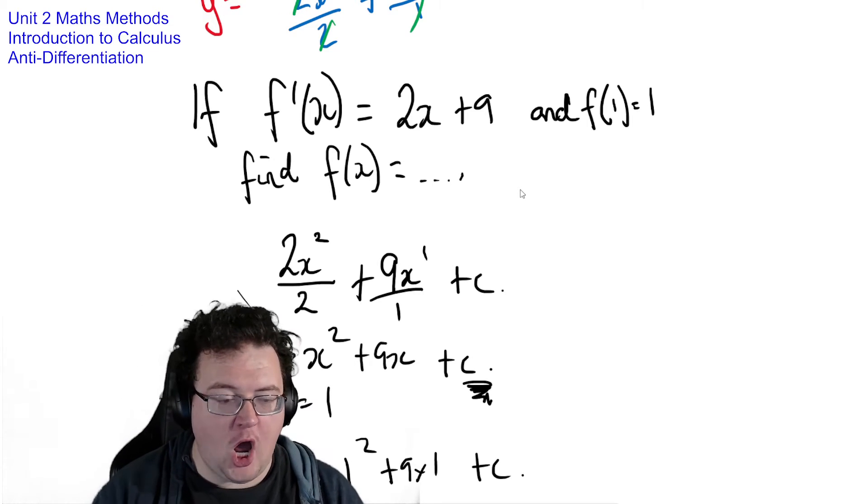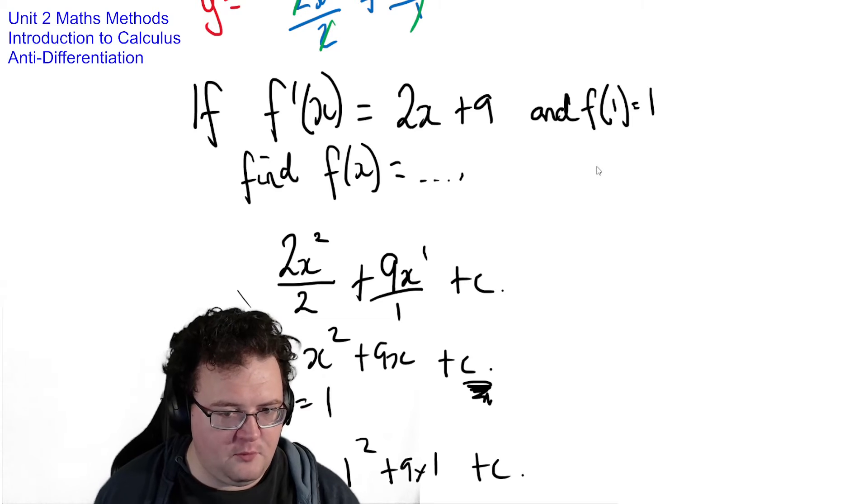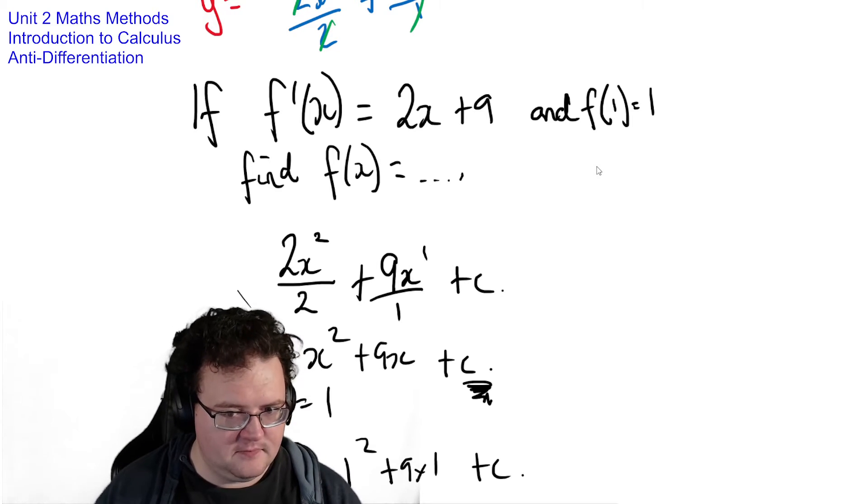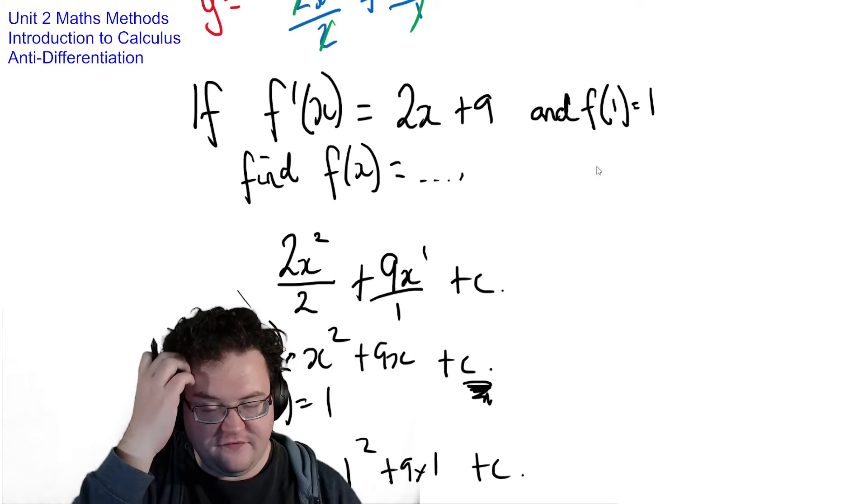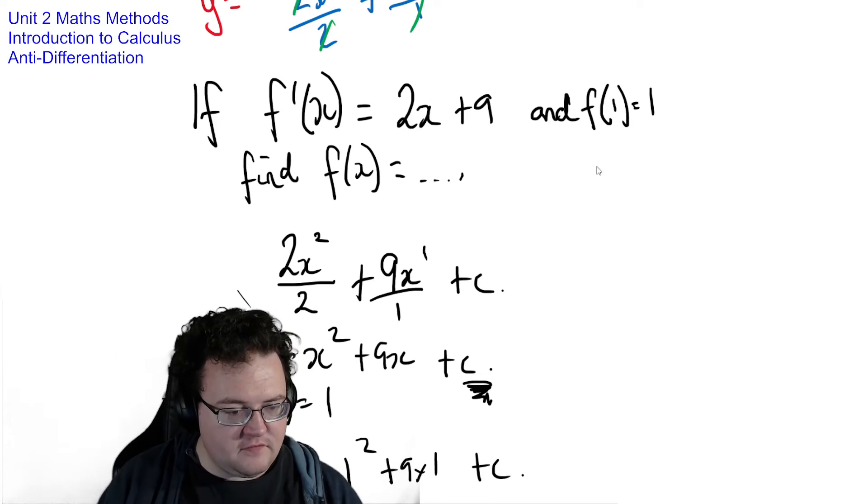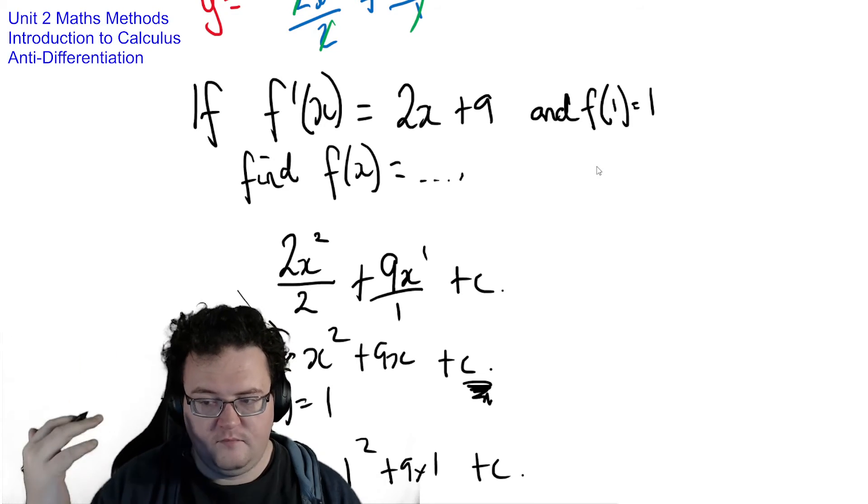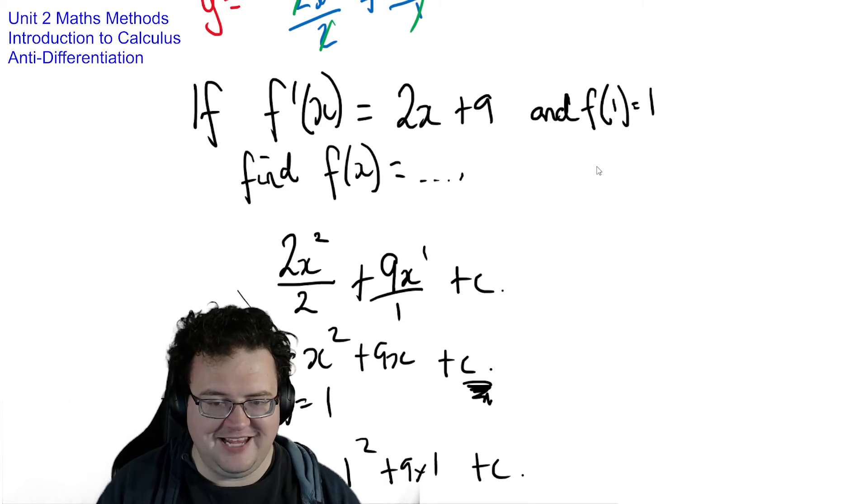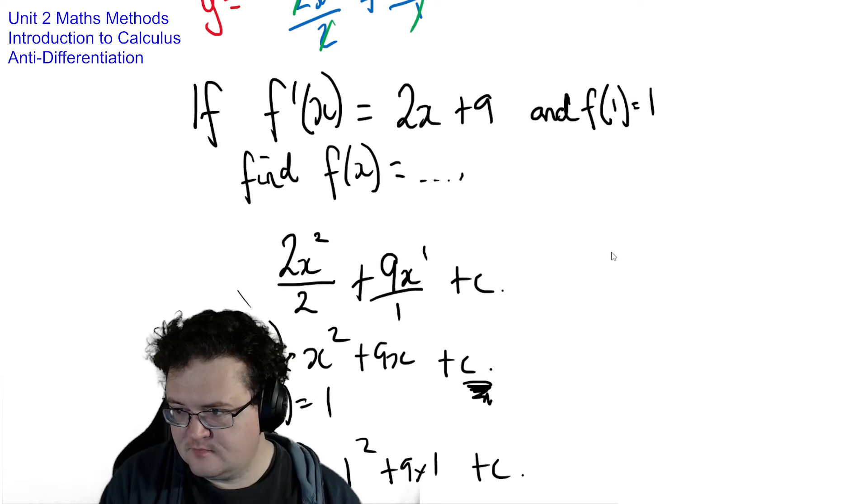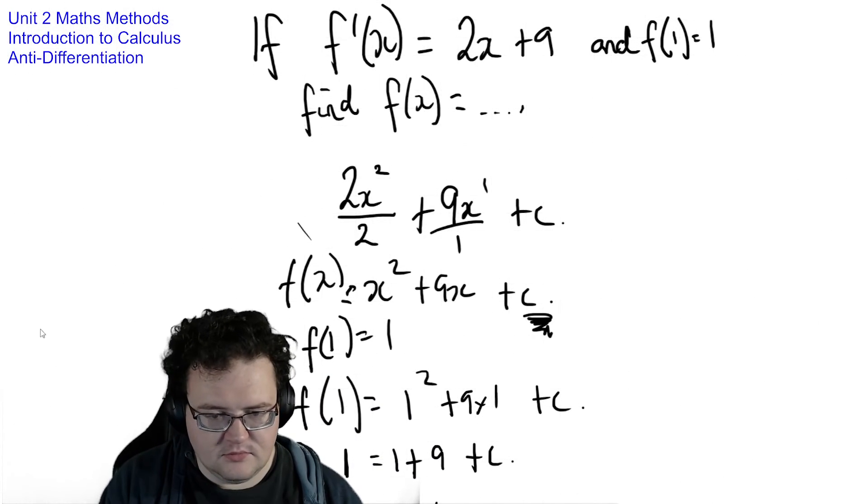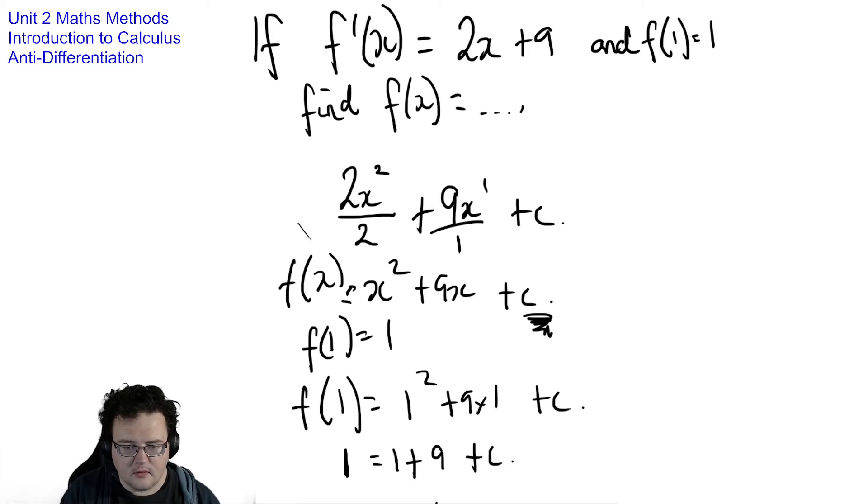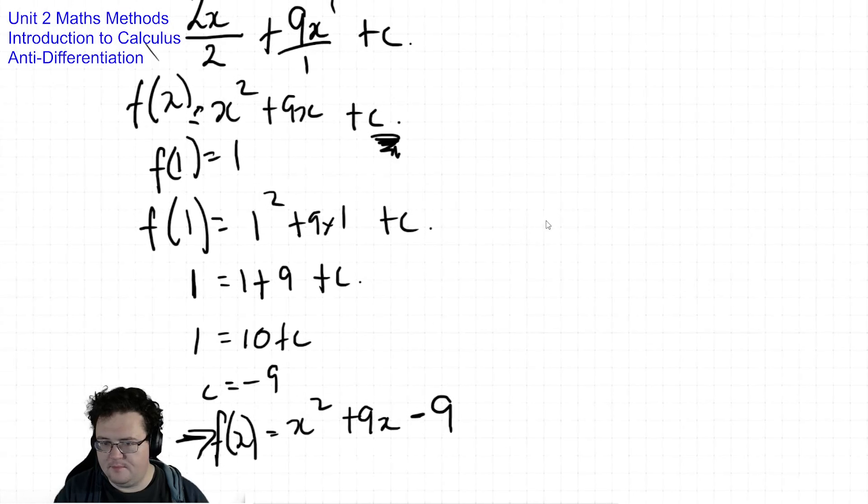Alright, so you've turned plus c with its infinite number of possibilities to one answer. Now there may be times where I don't give you that piece of information in which case you just leave it as plus c, but if I give you that extra piece of information then you're expected to probably get rid of it. So let's try another one.